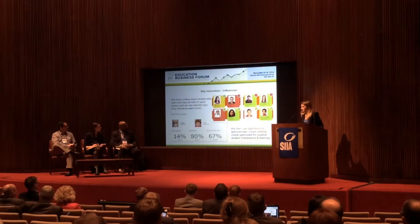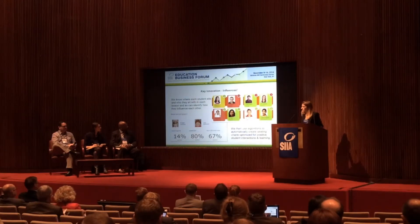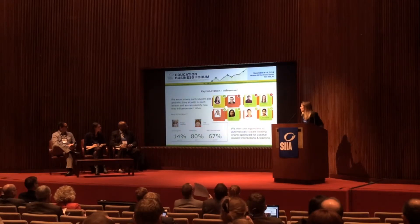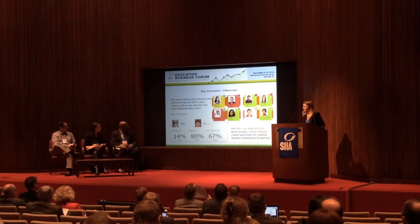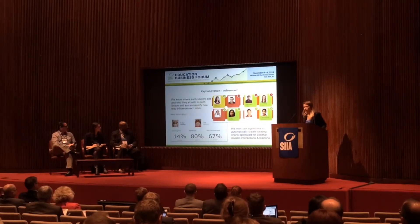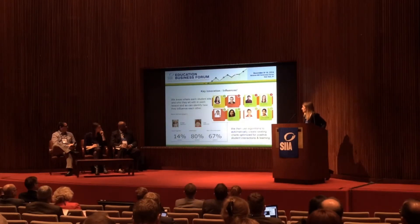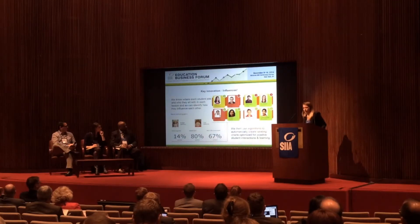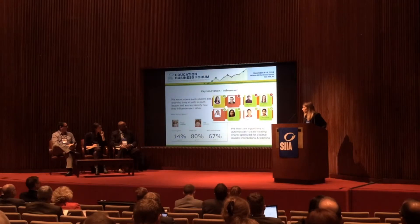Our key innovation is influences. Since we know where every single student in the school is seated and the behaviours that are occurring, we can see exactly how students are interacting and influencing each other in positive and negative ways. This information is invaluable when creating class lists for the new year and when creating your classroom layout. You can even just press a button to optimise the seating chart and get the best possible layout for your classroom, effectively separating students that are disruptive to one another and optimising for positive interactions at the press of a button.